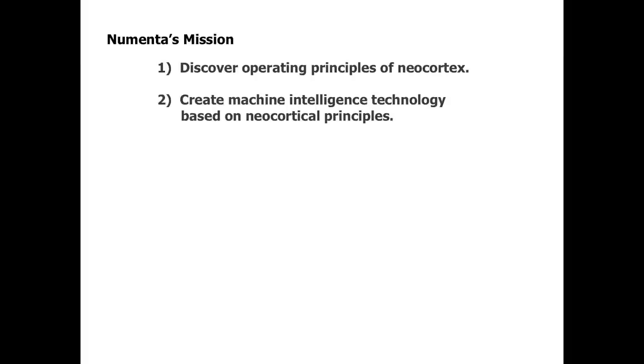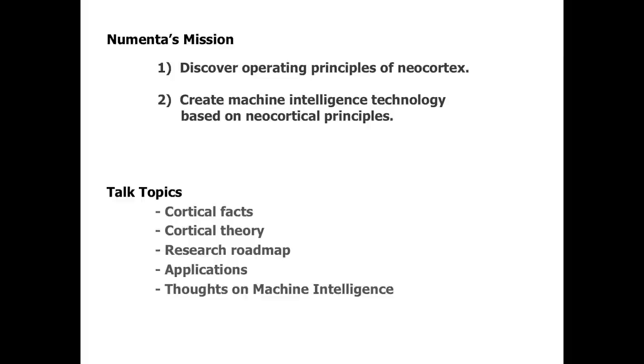Our company has two missions. The first is to discover the operating principles of the neocortex — the big wrinkly thing on top of your brain, about 75% of the volume of the human brain and the locus of all intelligence, language, hearing, vision. Everything you know about the world is stored in your neocortex. The second mission is to create machine intelligence technologies based on those principles. Our goal is not to recreate a human or pass the Turing test — it's to understand how the neocortex works and build machines on those principles.